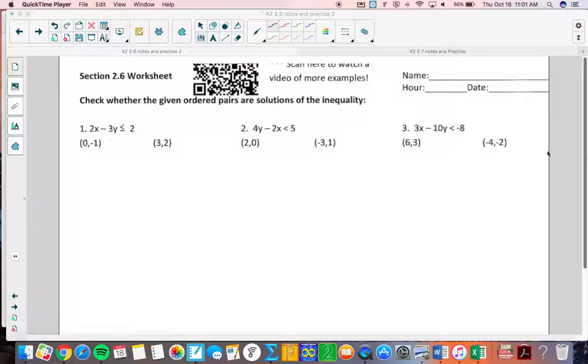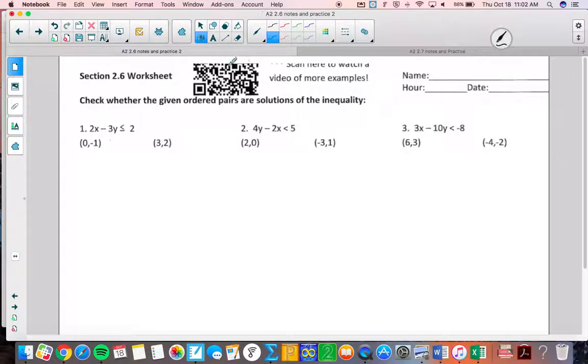This is Worksheet 2.6. I'm going to be checking whether or not given ordered pairs are solutions to an inequality. So, the 0 is an x and the negative 1 is a y. We substitute that into the inequality to see if it's actually true.